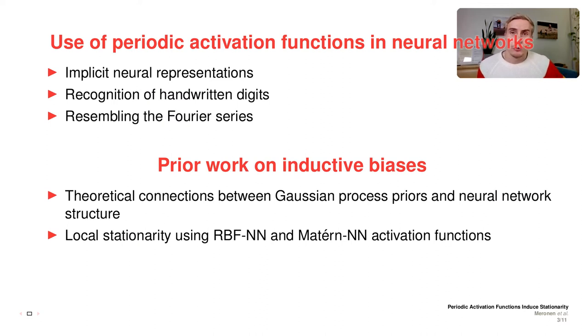Periodic activation functions have been used in previous work, for example to construct implicit neural representations in recognition of handwritten digits, for resembling the Fourier series, and so on. Prior work on Bayesian neural networks has made some connections between Gaussian process priors and neural network structure, allowing obtaining locally stationary activation functions. But the behavior produced by these activation functions is only locally stationary, so they are locally translation invariant. However, we show here that using periodic activation functions allows us to achieve globally stationary models, which means they also correspond to globally stationary translation invariants in the input space.